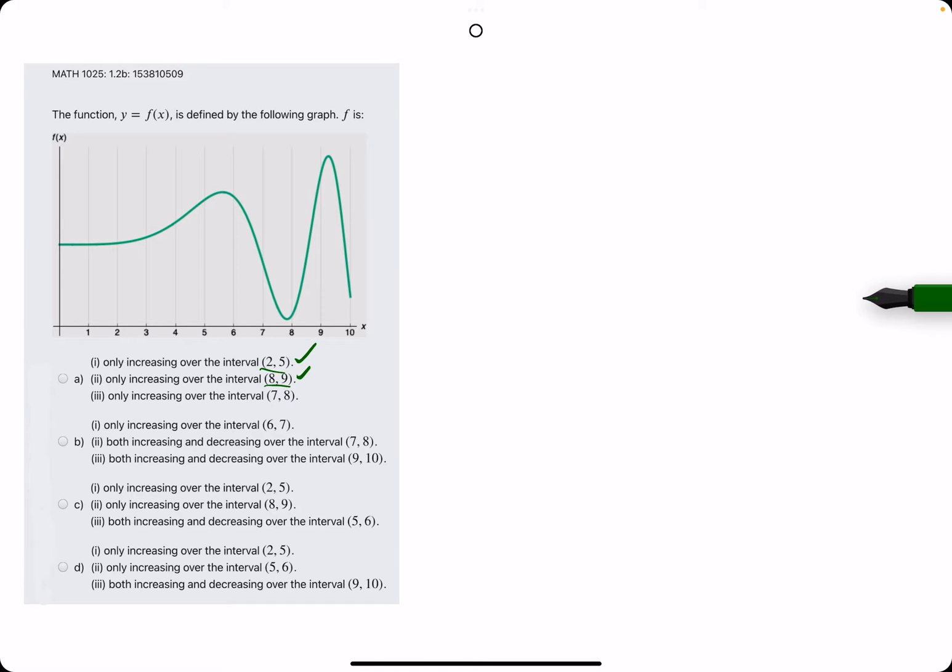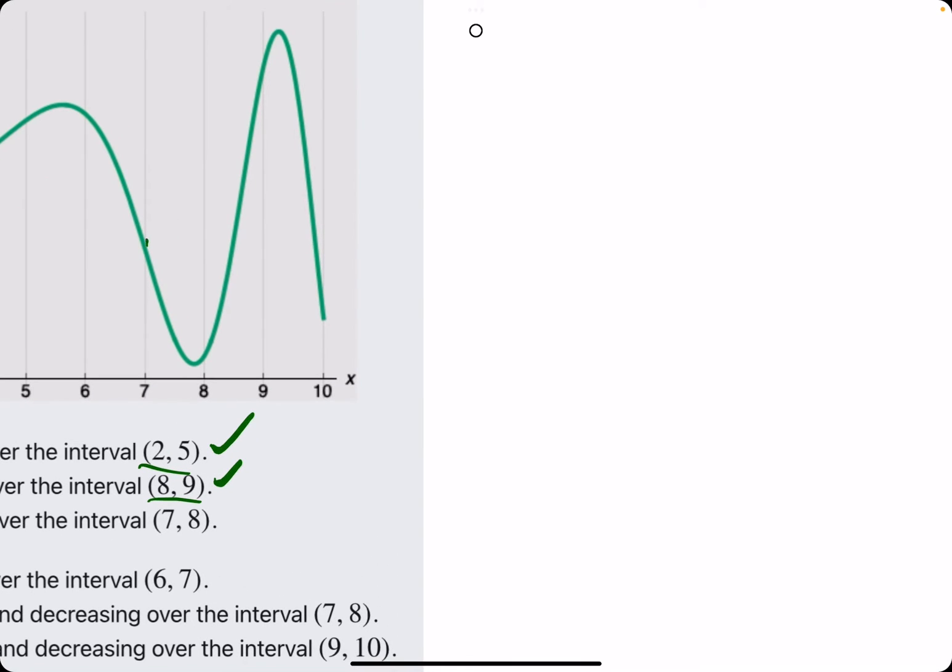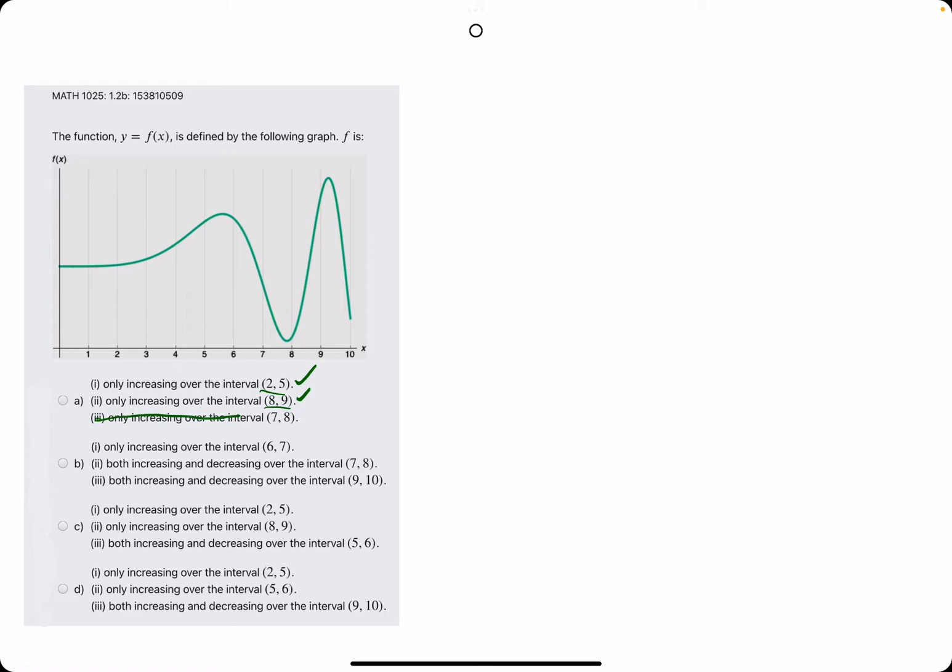Number 3, only increasing from 7 to 8. From 7 to 8, it actually starts off decreasing. So that statement cannot be true. So it makes the entire statement false.